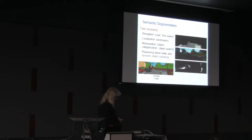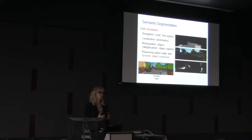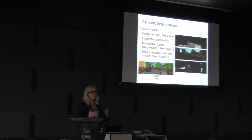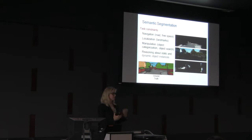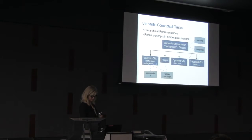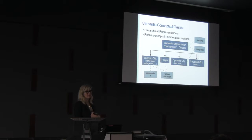Here are a couple of instantiations of how semantic information could be task-dependent. For navigation it's important to know where the free space is, so detecting roads matters. For localization, it's good to know which structures undergo changes versus not. For example, using trees as landmarks is unreliable across different seasons due to large appearance variation. Buildings and man-made structures serve as more natural landmarks. This task dependency suggests a natural categorization of semantic labels.